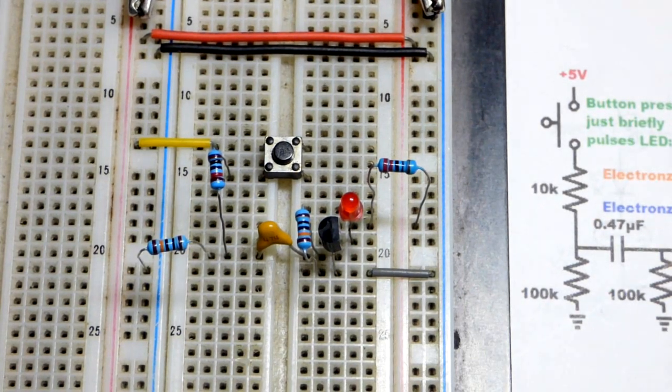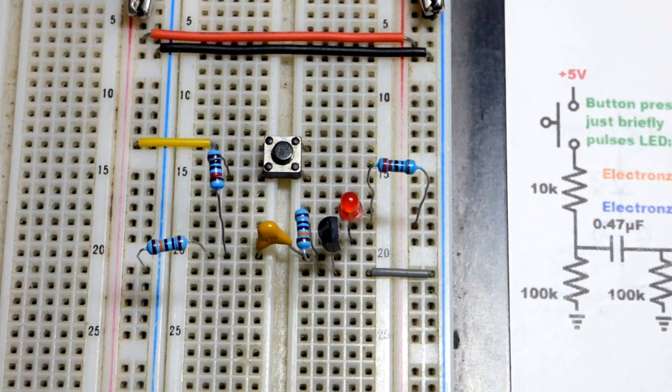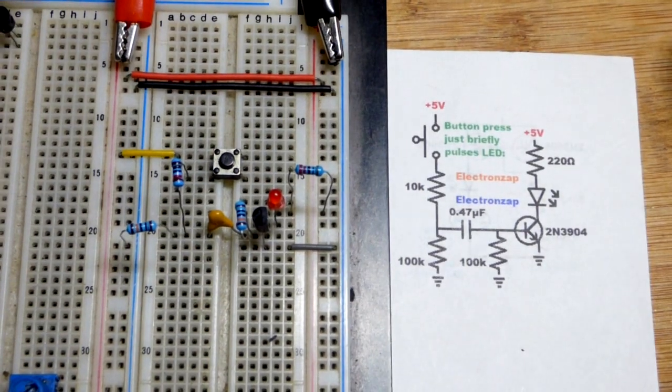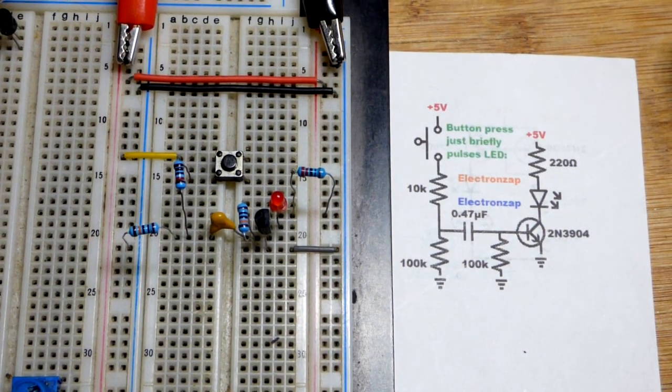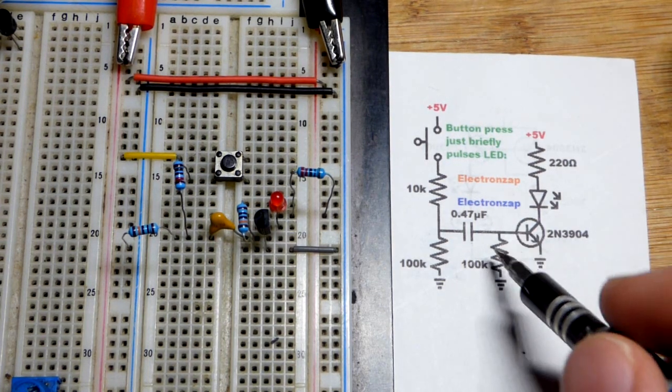Then you might see like a quick double flash, but the second one not as bright because switch bounce is a really rapid occurring thing right there. You just kind of briefly lose connection and it remakes connection. Usually it's pretty brief.